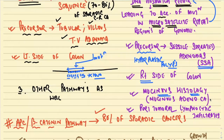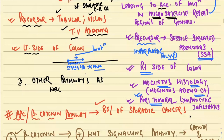Tumors in the MSI pathway category have a mucinous histology — mucinous adenocarcinoma. Very importantly, they also microscopically contain peritumoral lymphocytic infiltrates.